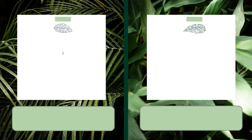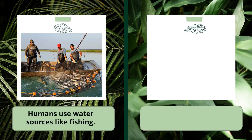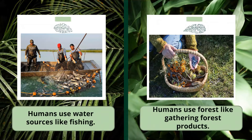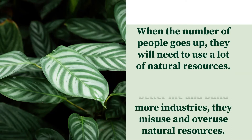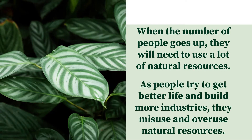Humans and living things use natural resources for their livelihood in many ways — for example, fishing and gathering forest products, and using wood to build houses. However, when the number of people goes up, they need to use a lot of natural resources. As people try to build better lives and more industries, they misuse and overuse natural resources.